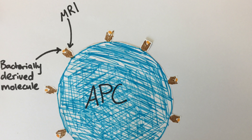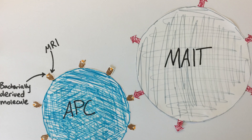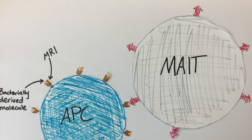MAIT cells, which stands for mucosal-associated invariant T-cells, can interact with the MR1 receptor through their T-cell receptor. However, the MAIT cell TCR is different to normal T-cell receptors because it is semi-invariant, so it only recognises a specific ligand, whereas normal T-cell receptors have a wide range of variability.